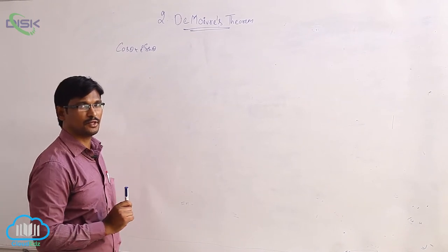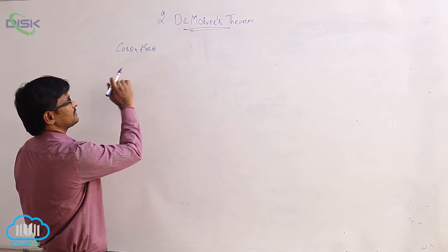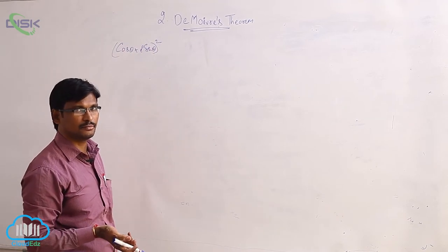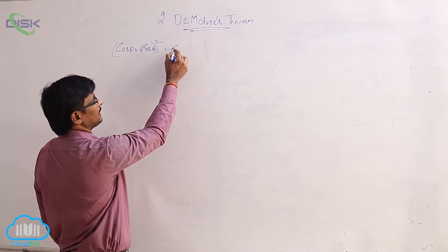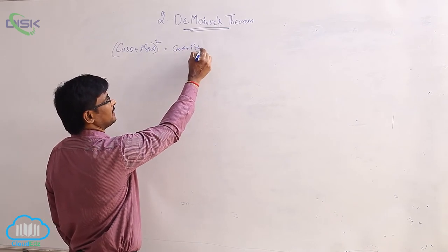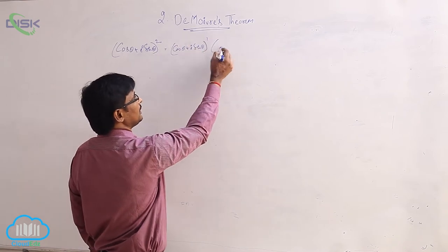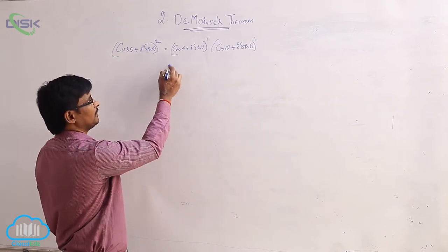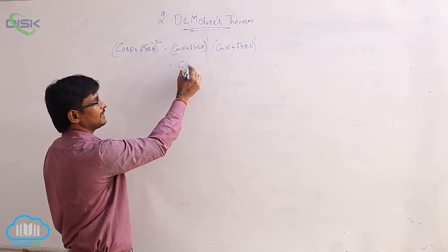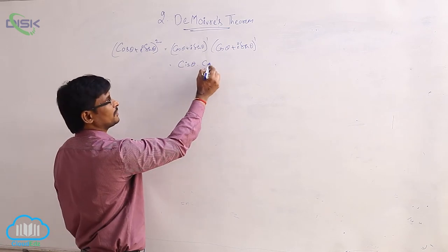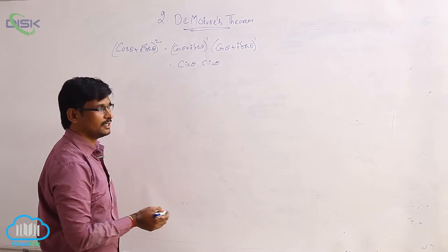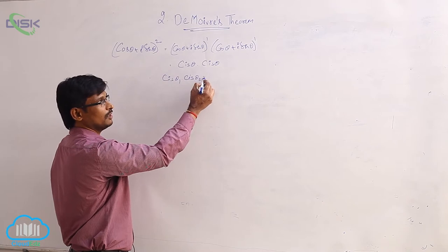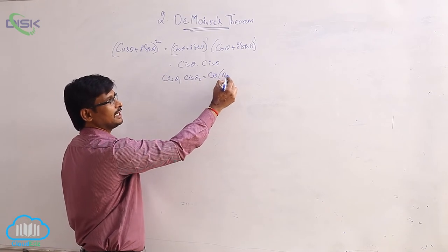We will discuss De Moivre's theorem now. Consider cos theta plus i sine theta — if it is whole square, what is the value? We can write cos theta plus i sine theta whole power 1 into cos theta plus i sine theta whole power 1. We know that cos theta plus i sine theta can be written as cis theta. We have the property: cis theta_1 into cis theta_2 equals cis of theta_1 plus theta_2.